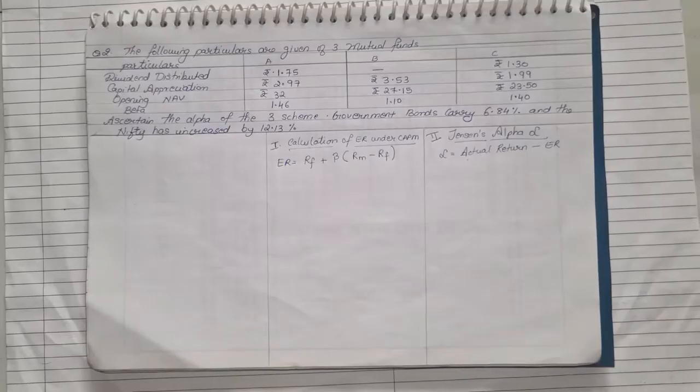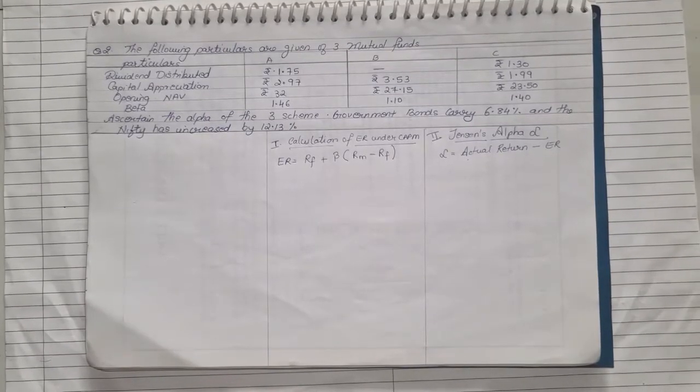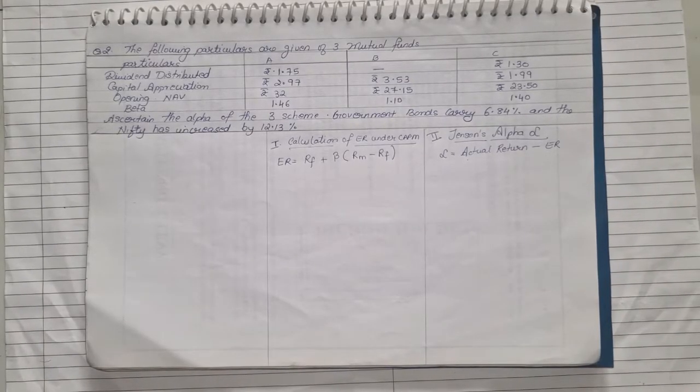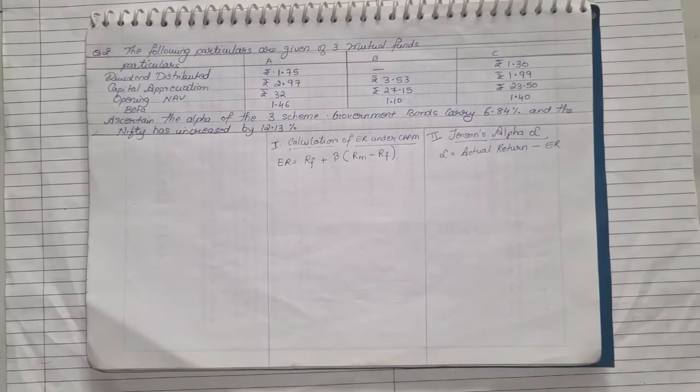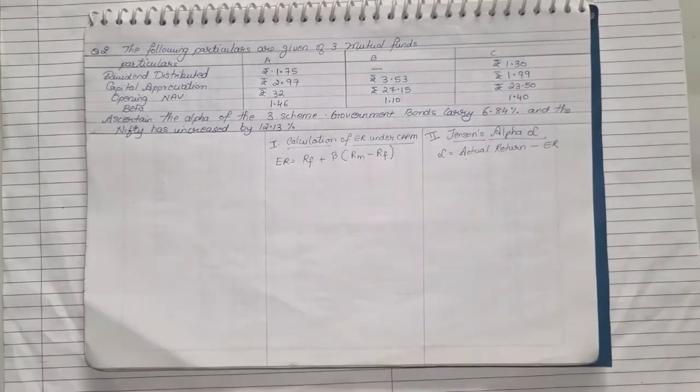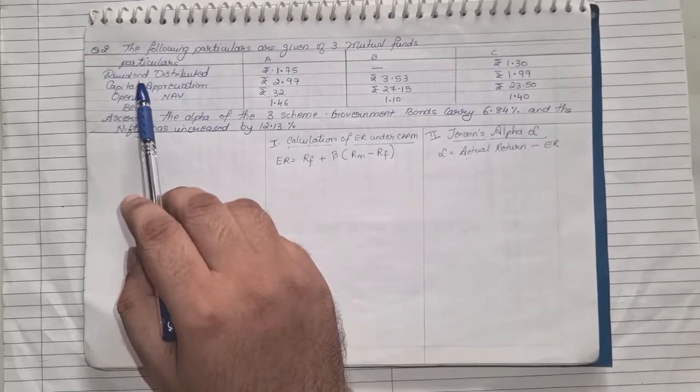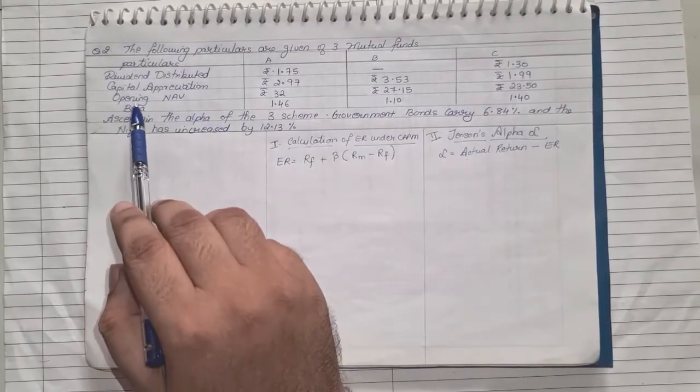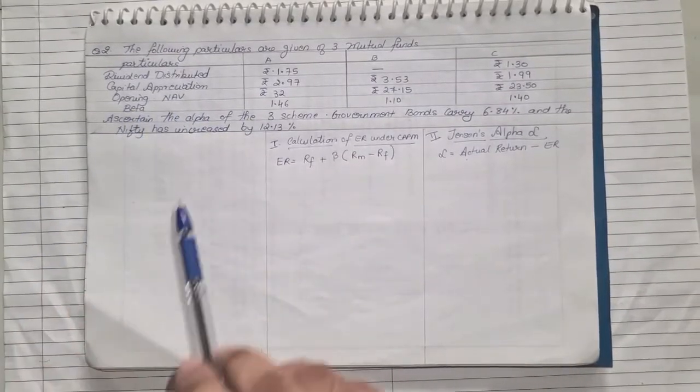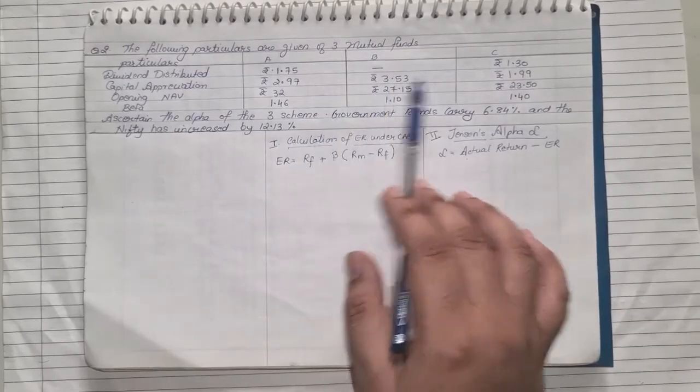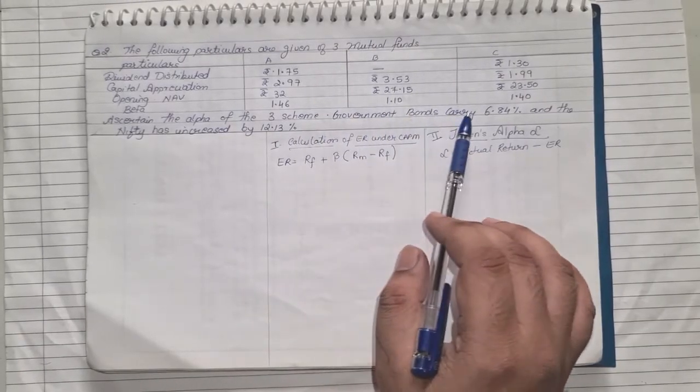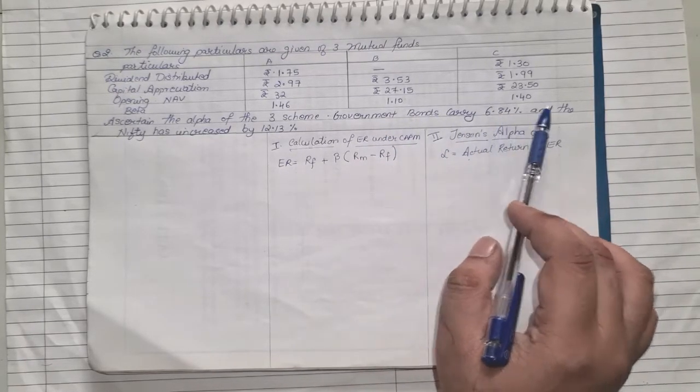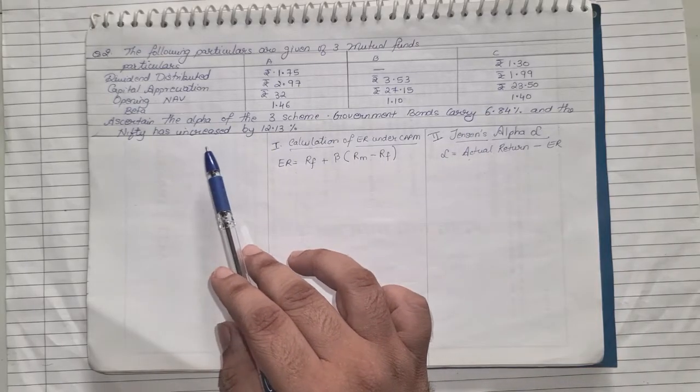Now this is the second type of sum where they are asking us to find the alpha when they are giving you a different kind of data. In this sum they have given us dividend distributed, capital appreciation, opening NAV, and beta. They're asking us to ascertain the alpha of the three schemes A, B, C. Government bond carries some percentage. Remember, any security by the government or RBI is always your risk-free return, and they are giving you Nifty, that is your market return.